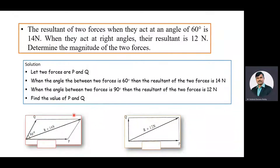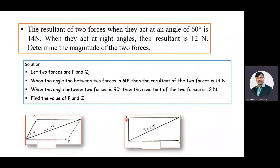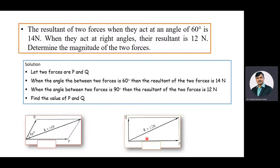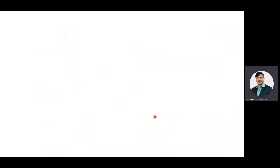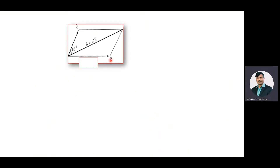First we will consider Case 1, where the angle between the two forces is 60 degrees. Then we will move towards Case 2, where the angle between the two forces is 90 degrees. These two cases are to be equated. Now we will consider Case 1, where the angle between the two forces is 60 degrees.